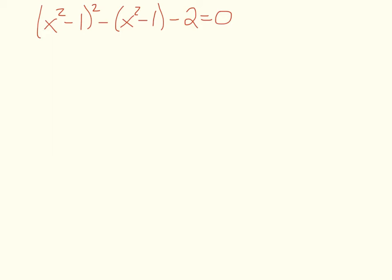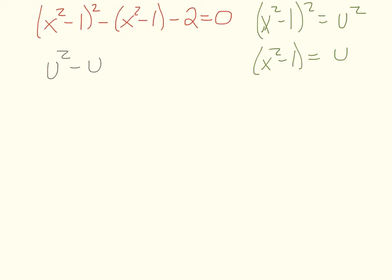We use u-substitution again: let (x squared minus 1) squared equal u squared, and x squared minus 1 equal u. Rewriting gives u squared minus u minus 2 equals zero. This should factor, but if it doesn't, we can always use the quadratic formula. Just remember you're solving for x, not u — after factoring or using the quadratic formula, you must resubstitute the original information back in.